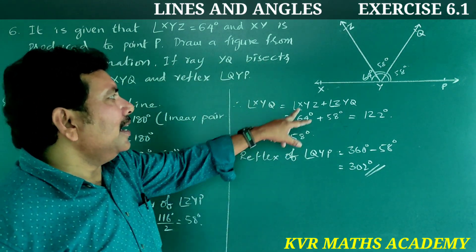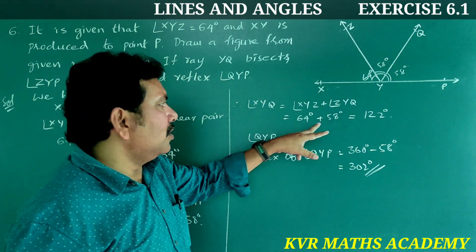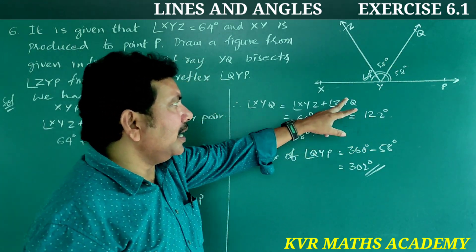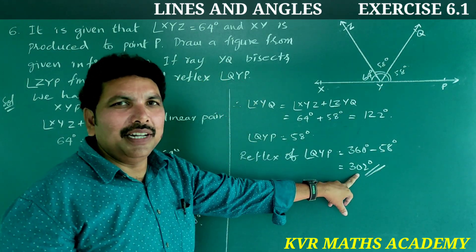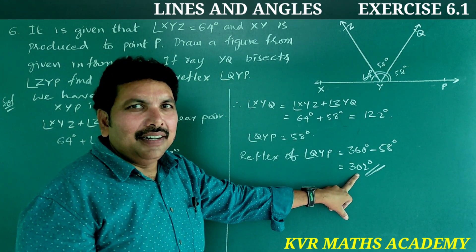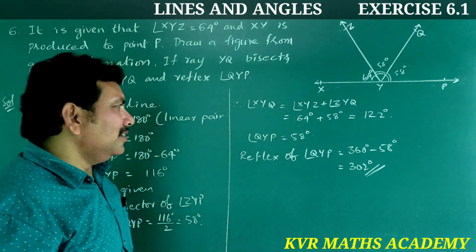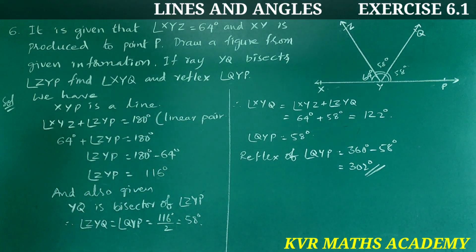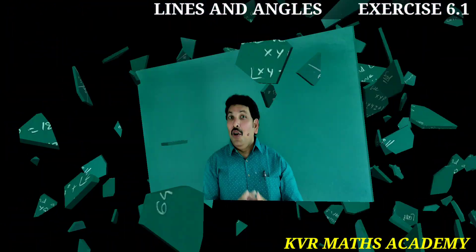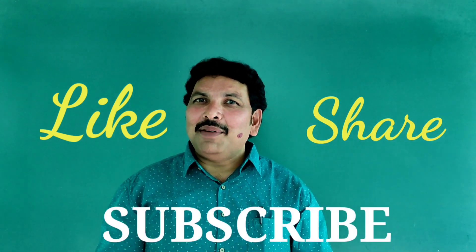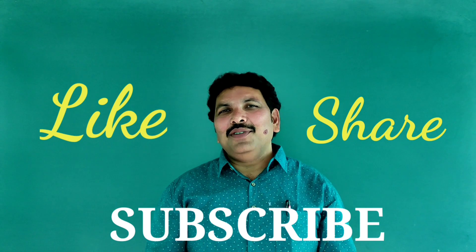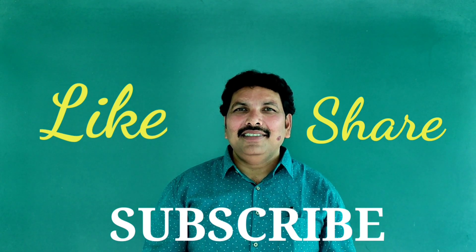Is it clear? Angle XYQ is equal to 122 degrees, and reflex angle QYP is equal to 302 degrees. Understood clearly. Okay viewers, like, share, and subscribe to my channel. Thank you very much. Bye.